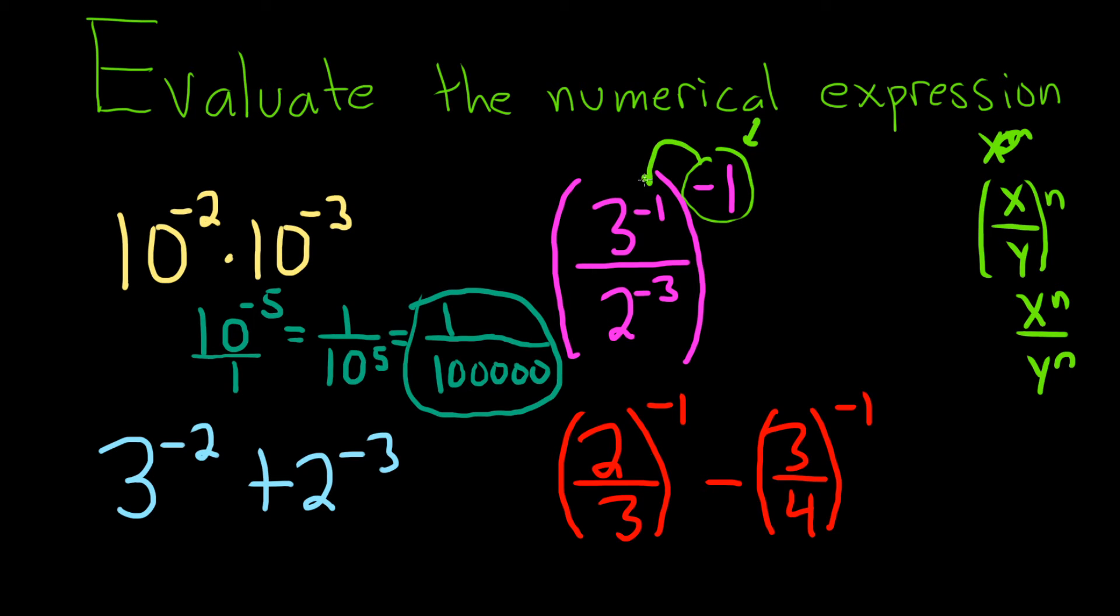And you do negative 1 times negative 1, that gives you 1, so you get 3 to the 1. Then you do negative 1 times negative 3, that gives you 3, so you get 2 cubed. So you just get 3 over 8. That's probably the easiest way to do it.